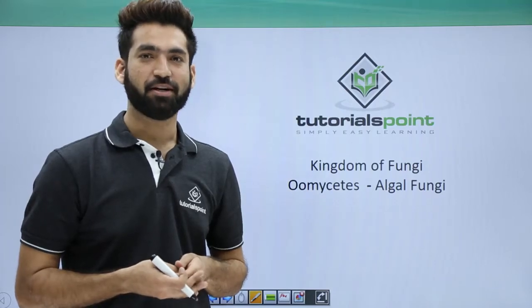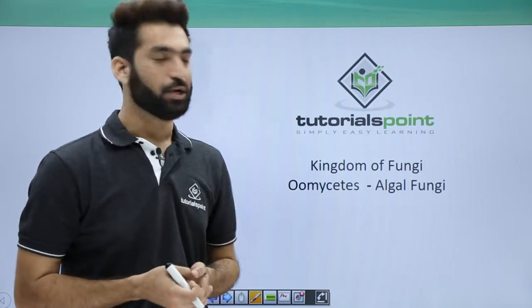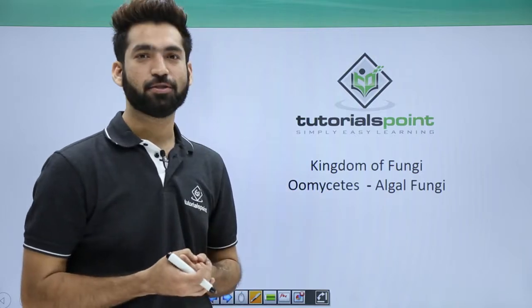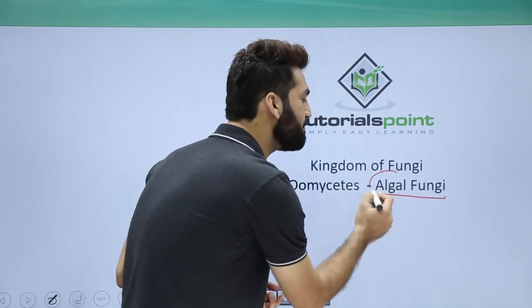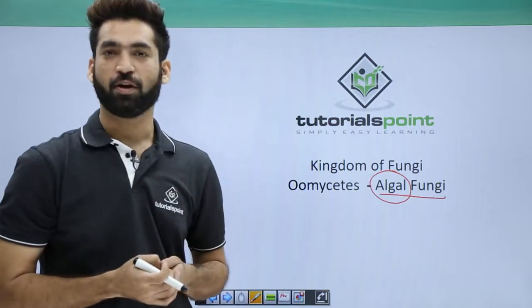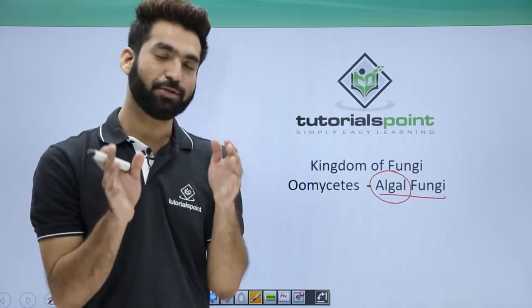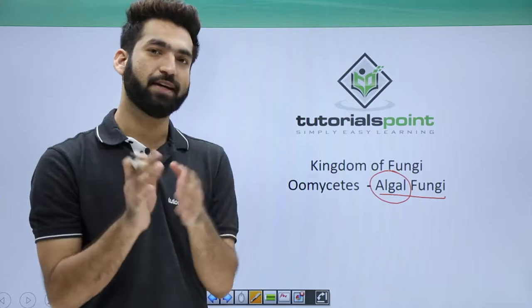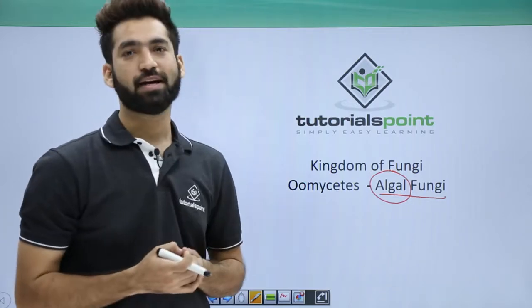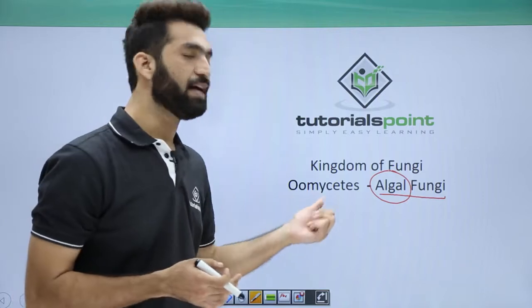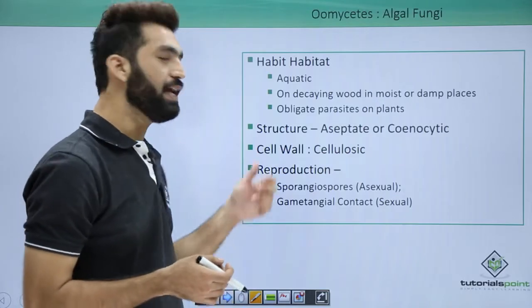In this session I'll be detailing one class of fungus: oomycetes. They are also called algal fungi because they have something related to algae — they have cellulose. If you remember, I've told you that the cell wall of fungus is made up of chitin, but oomycetes are the class of fungus where you will have a cellulosic cell wall.